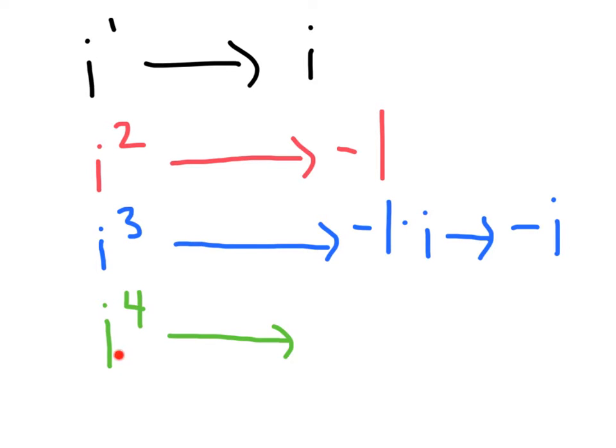Let's keep on rolling. Here we've got i to the 4th. That'll give us negative 1 times i times i, or times i squared. Which we know i squared is going to be negative 1, so we'll get negative 1 times negative 1, or just 1.